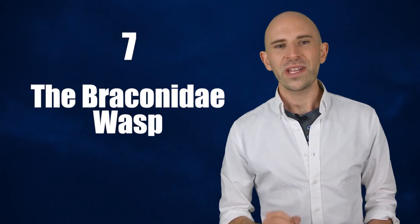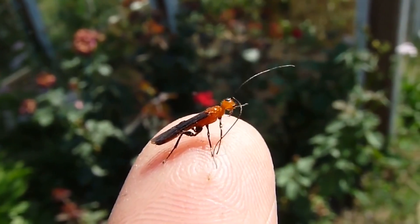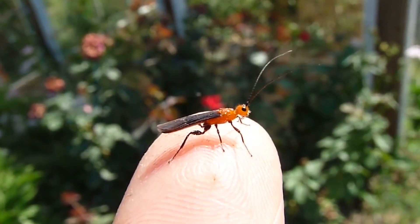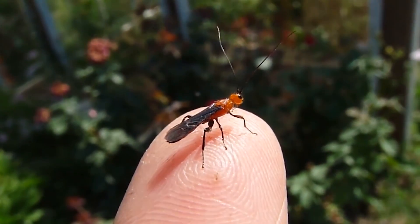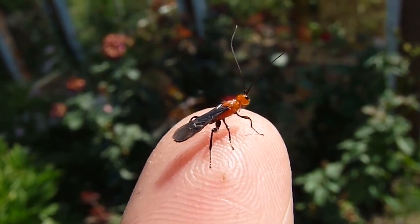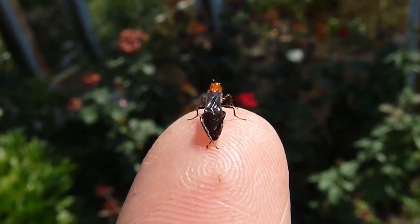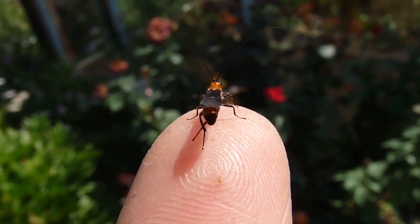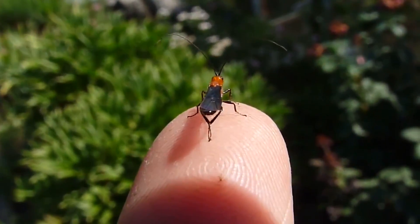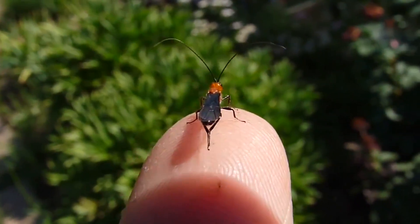7. The Braconidae Wasp. Braconidae is a large family of parasitoid wasps, wasps that lay eggs inside other animals. Luckily for them, they are highly resistant to radiation, so they already have a high likelihood to survive nuclear fallout. Researchers have discovered they can withstand up to 180,000 rads of radiation, making them one of the toughest animals alive today.